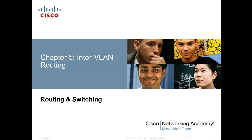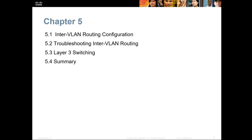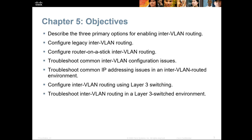Welcome to Routing Essentials, dealing with Chapter 5: Inter-VLAN Routing. Inter-VLAN routing is the routing between VLANs. A big part of that is configuring it, troubleshooting it, and understanding Layer 3 switching technologies. Our objectives are to describe options for VLAN routing, configure legacy inter-VLAN routing, configure router-on-a-stick, troubleshoot, configure VLAN routing on a Layer 3 switch, and troubleshoot inter-VLAN communication on a Layer 3 device.